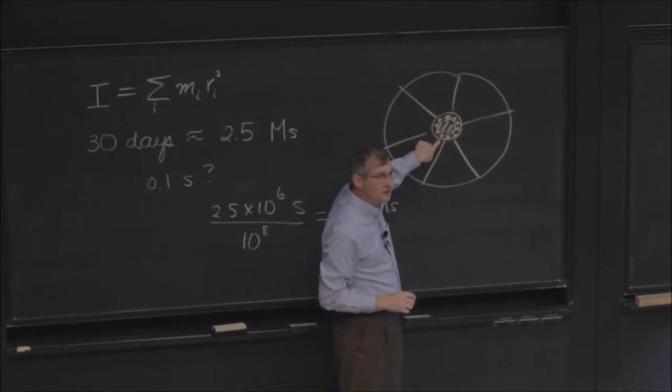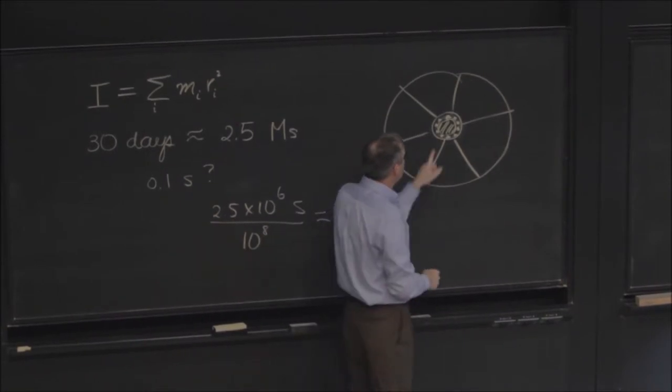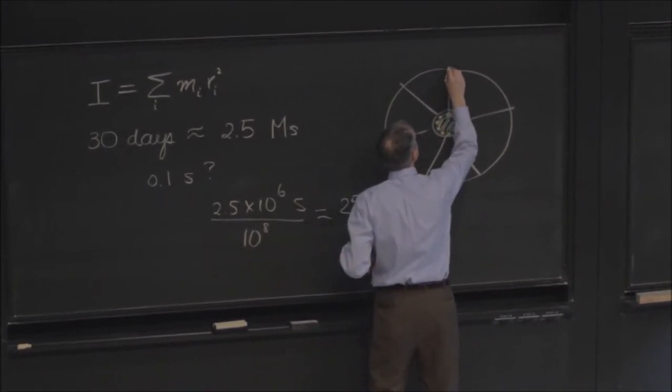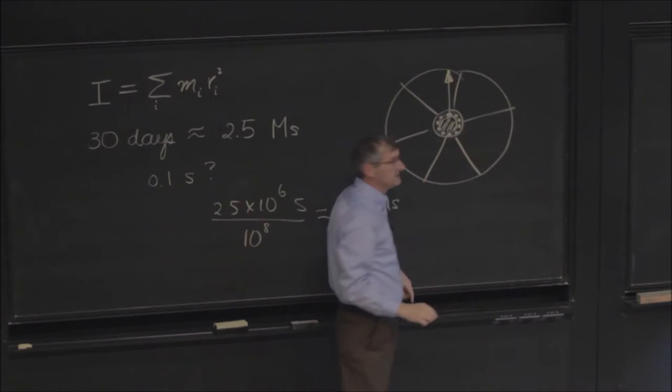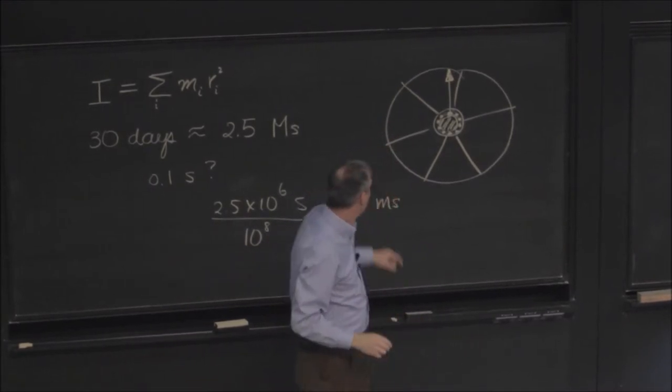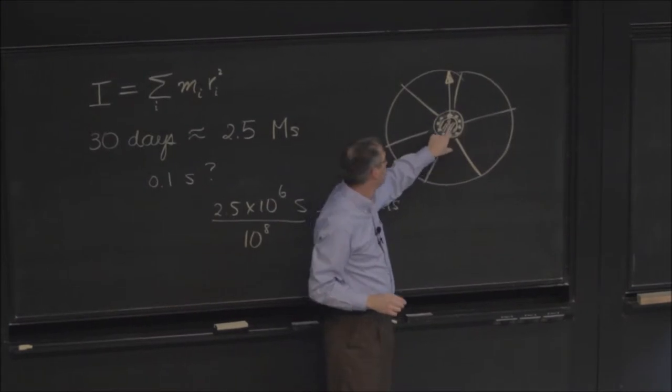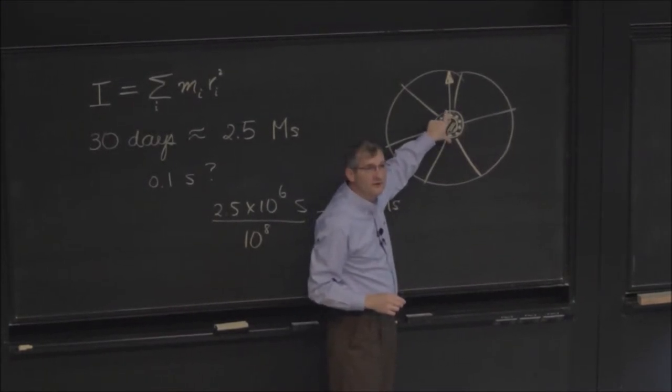It will push in the normal direction. Suppose that this is now trying to hold the wheel up against gravity. So it's going to have to supply a force of reaction up. So the pressure will be off the ball bearings at the bottom.